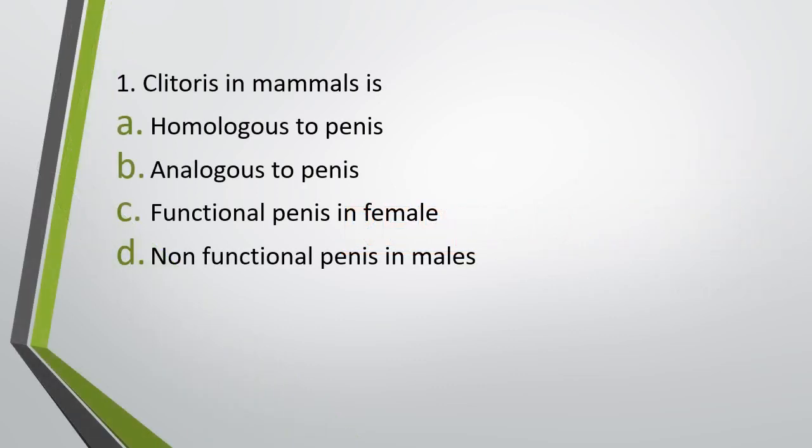Question number one. Clitoris in mammals is: homologous to penis, analogous to penis, functional penis in females, or non-functional penis in males. Correct answer is option A — it is a homologous structure to penis.